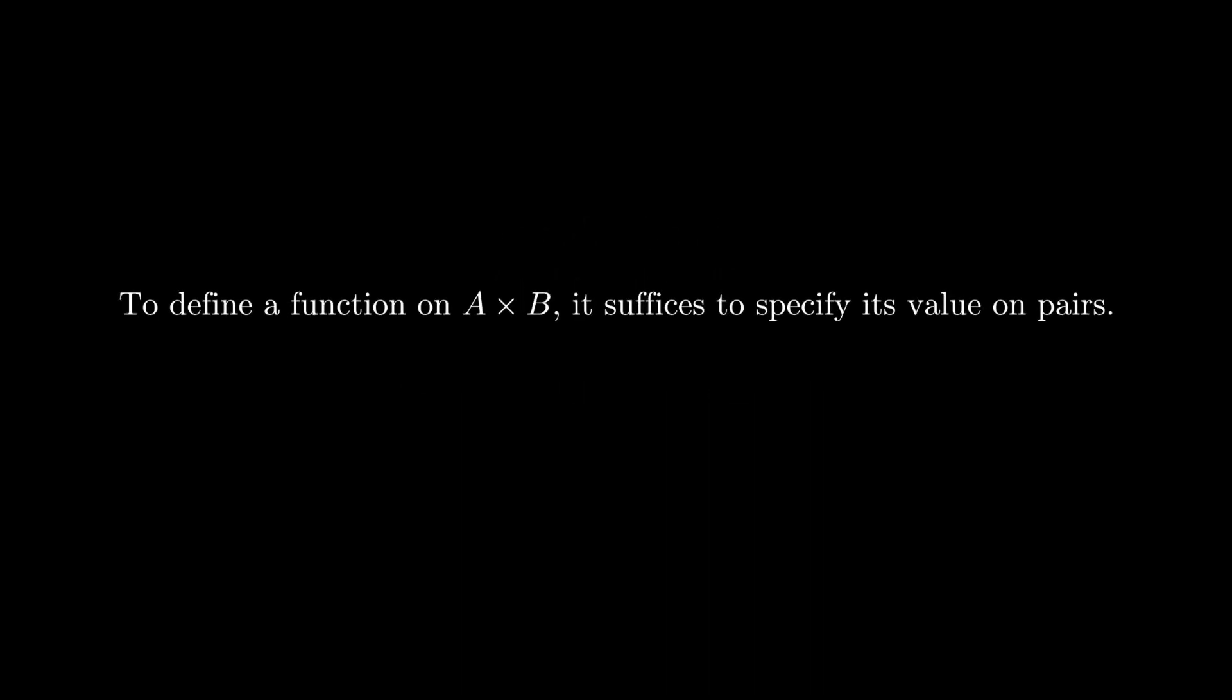So just to recap, while in set theory we define the Cartesian product as the set of elements of the form little a comma little b, in type theory we are defining functions, in particular stating that to define a function A cross B to C, it suffices to define it on pairs little a comma little b. This statement is called the recursion principle for products in type theory.